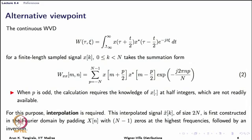So, beginning again from the continuous Wigner-Ville distribution — which is continuous in both time and frequency — and writing this integral for a finite length sample signal: assume you have N observations obtained at sampling frequency Fs. The integral now takes the form of a summation where the index runs from minus N to N minus 1. Importantly, observe that to compute the discrete Wigner-Ville — which is discrete in both time and frequency like the DFT — I need the values of x at fractional instances, exactly halfway between the sampling instances. Particularly when p is odd, I require values at 0.5, 1.5, 2.5, and so on, which I do not have because I only have the discrete time signal at 0, 1, 2, and so on.